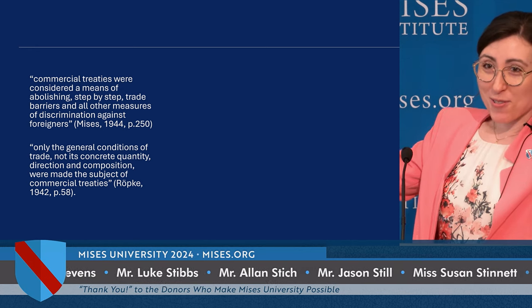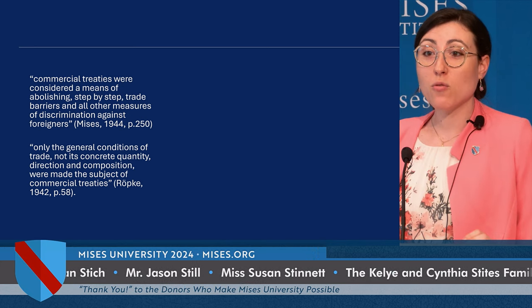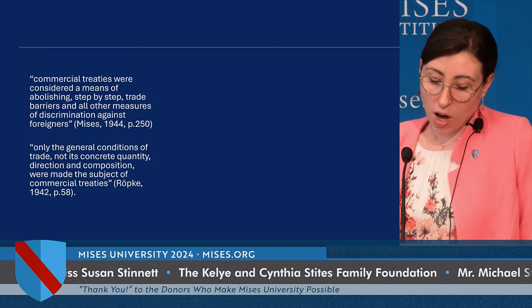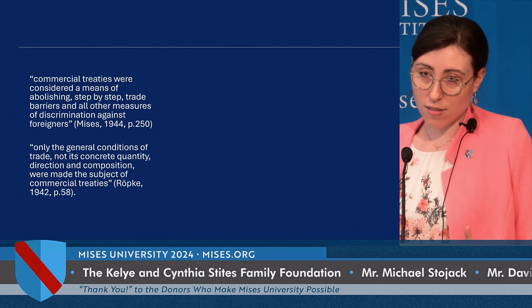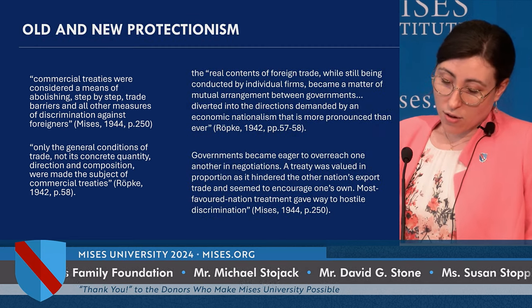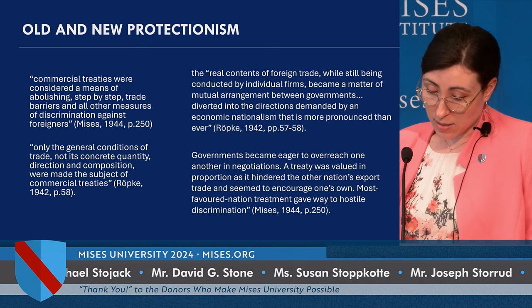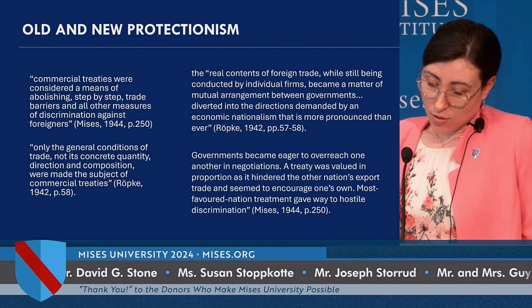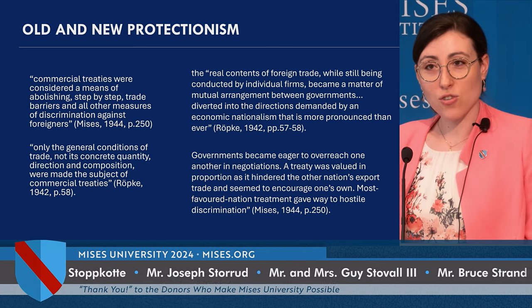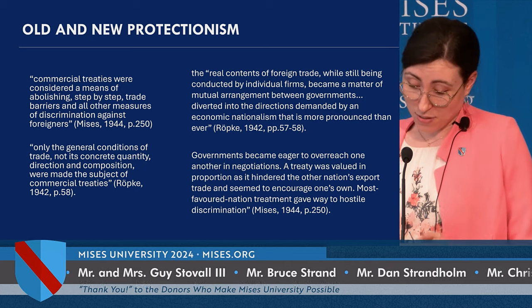Here are quotes from Mises and Ropke in 1942 and 1944 describing what commercial treaties should do: they should specify the general conditions of trade and be a means of abolishing step-by-step trade barriers and all other measures of discrimination. What they really are now, according to Ropke, is 'a matter of mutual arrangement between governments diverted into directions demanded by economic nationalism. Governments are eager to overreach each other in negotiations and value a treaty in proportion as it hindered the other nation's export and seemed to encourage one's own.' This was written in 1944 — it could have been written yesterday.